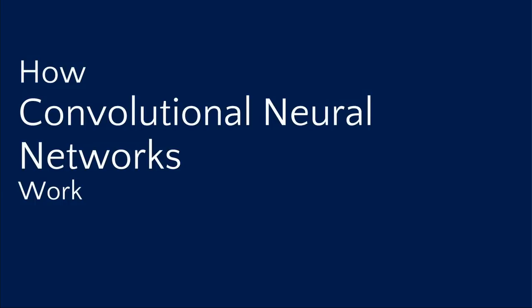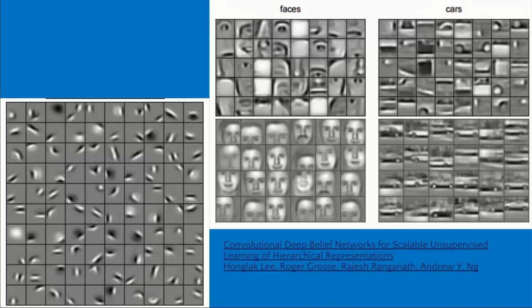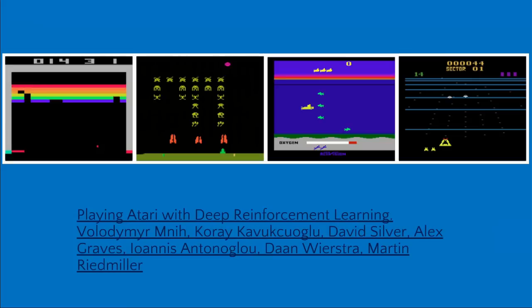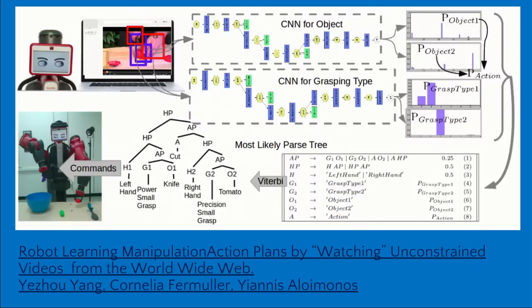When you hear about artificial intelligence, about half the time what people are talking about is convolutional neural networks. Understanding how they work is really helpful in getting a peek behind the curtain at the magic of artificial intelligence. Convolutional neural networks take images and from them learn the patterns — the building blocks that make them up. You can pair this with reinforcement learning algorithms to get algorithms that play video games, learn to play Go, or even control robots.